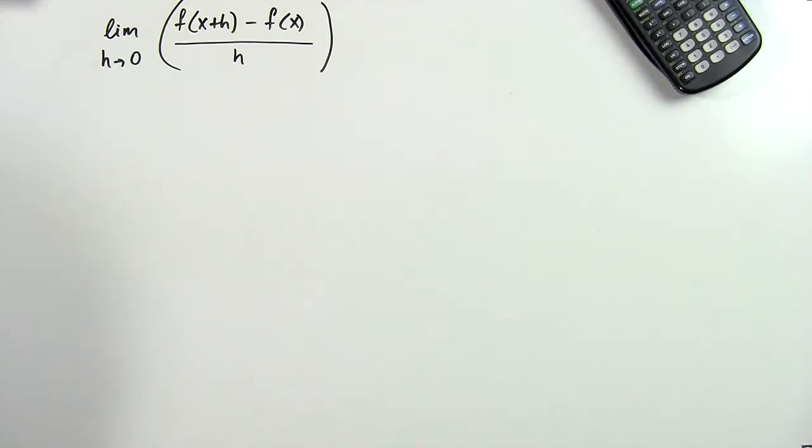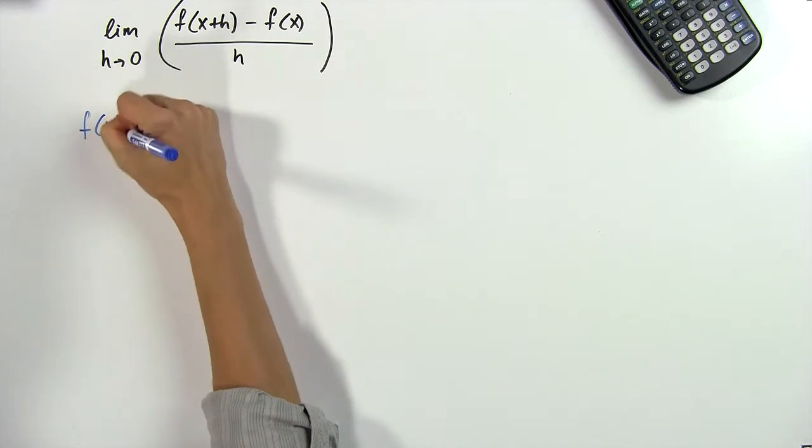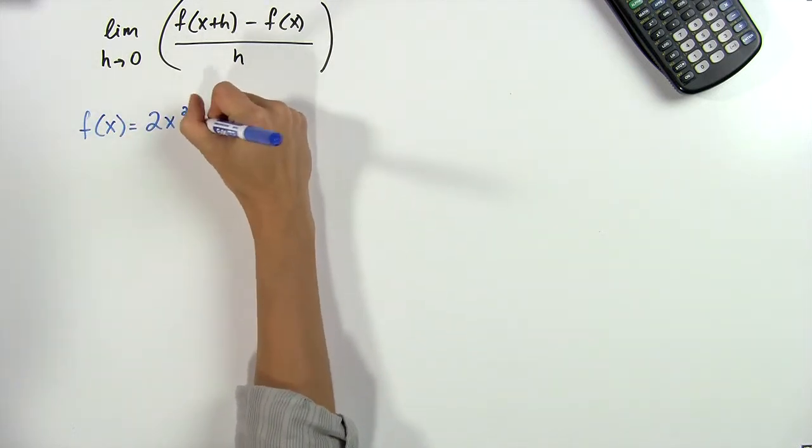So let's do an example and see how we use it. Suppose we need to find the slope of a tangent line at a point x on the function 2x squared plus 6.